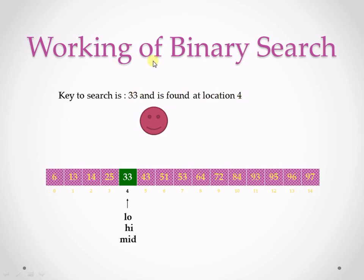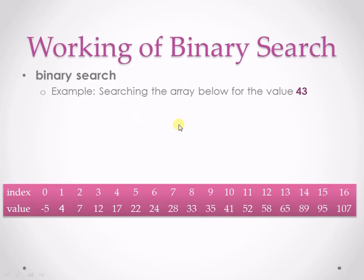So in this way binary search works when the key element is present in the array — that is, search successful. Now let's see one more example with which I will explain the unsuccessful search. Here the example I am going to use involves lower boundary and upper boundary, which you can also refer to as minimum and maximum instead of low and high.